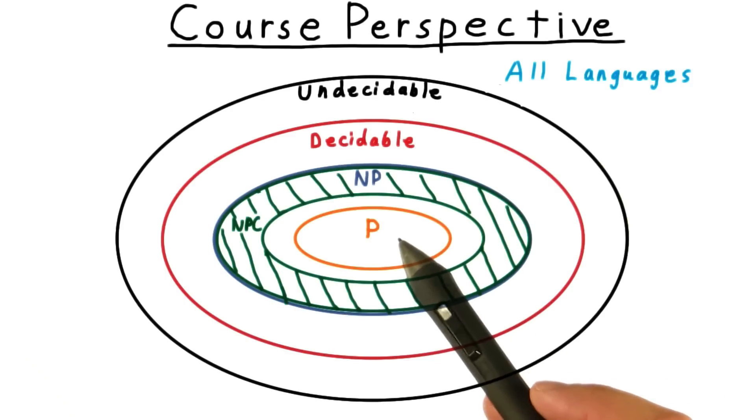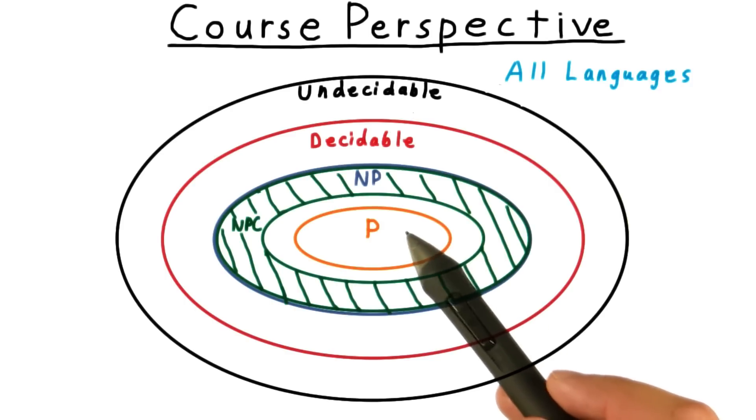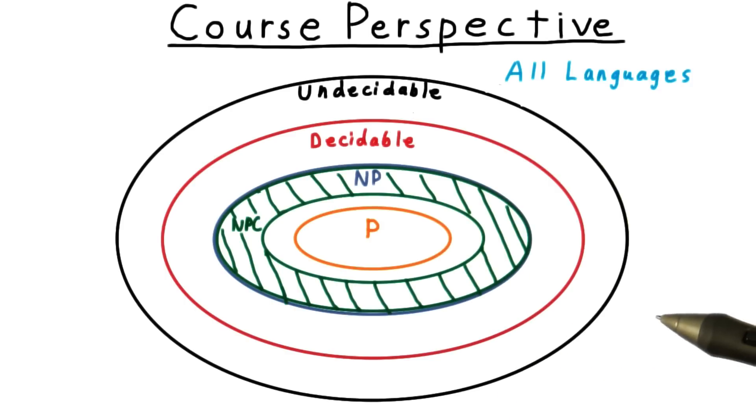In this section, we're going to focus on this class P, the set of polynomially decidable languages. The overall tone here will hopefully feel a little more optimistic. In the previous sections of the course, many of our results were of a negative nature.